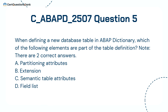When defining a new database table in the ABAP dictionary, which of the following elements are part of the table definition? Note, there are two correct answers. A. Partitioning attributes. B. Extension. C. Semantic table attributes. D. Field list.